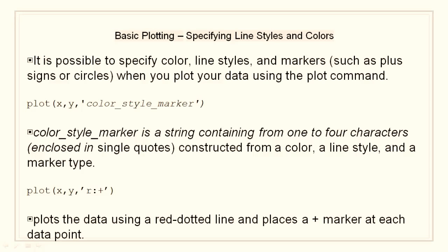Color style marker is a string containing from one to four characters, enclosed in single quotes, constructed from a color, a line style, and a marker type. For example, if I need a red dotted line with plus markers at each data point, I will write plot x, y, and in single quotation I will write r, semicolon, and plus, where r denotes the color red, semicolon denotes the dotted line, and plus denotes the data marker.